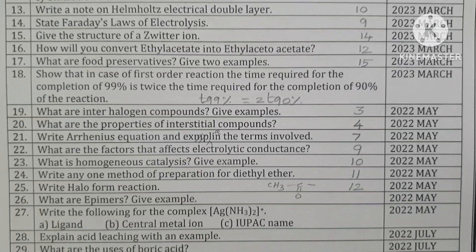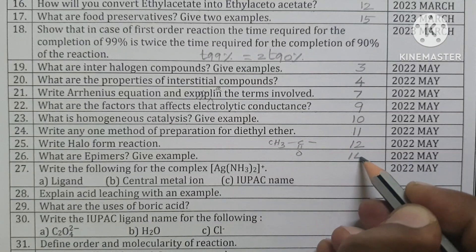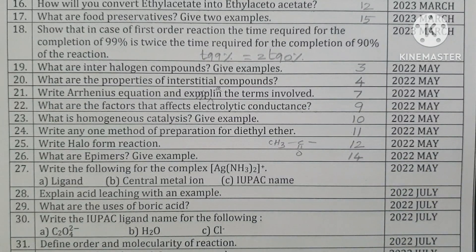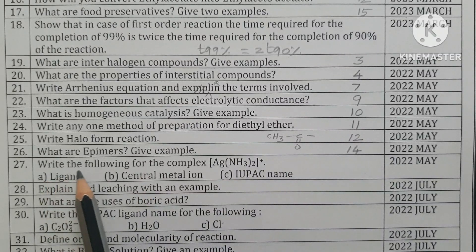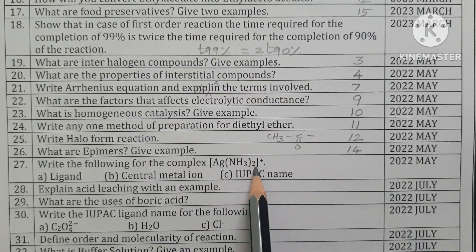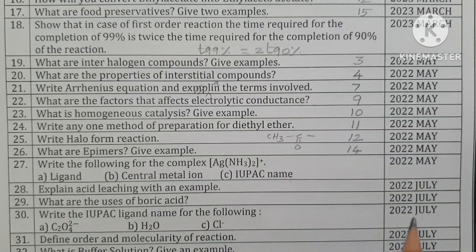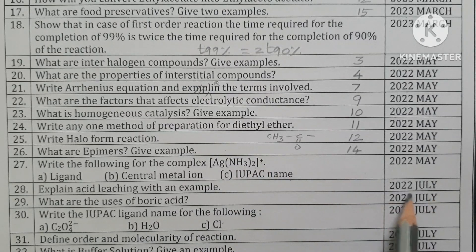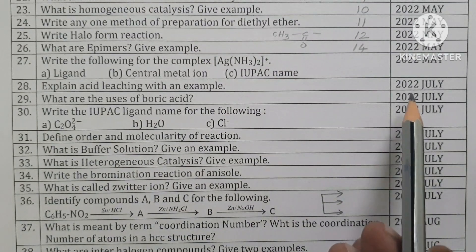12th unit: what are amines? Give examples — lesson 14. For the complex diammine silver(I) ion: ligand is amine, central metal ion is Ag+. IUPAC name: diammine silver(I) ion — July 2022 question.